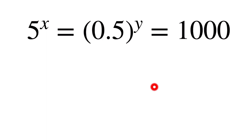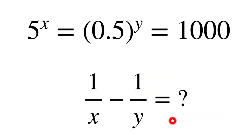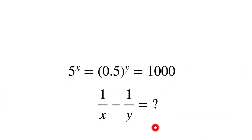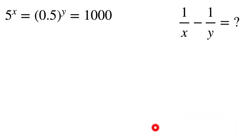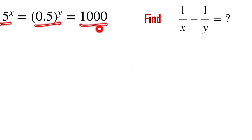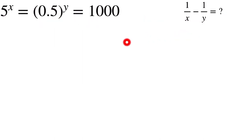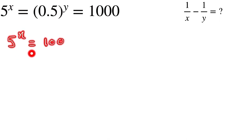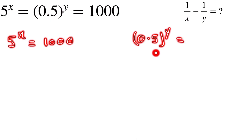Welcome back. Today we are going to solve this question. If you can solve it, pause the video and take a try, otherwise let's see the solution. The question is: 5 to the power x is equal to 0.5 to the power y is equal to 1000. We have to find the value of 1/x minus 1/y. We can split this as: 5^x = 1000 and 0.5^y = 1000.